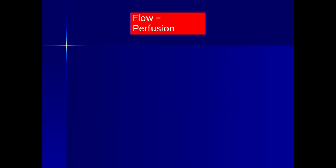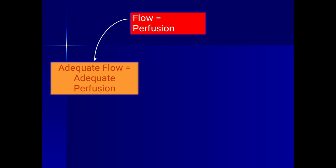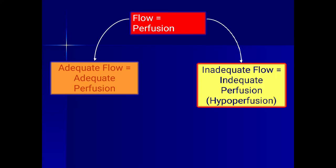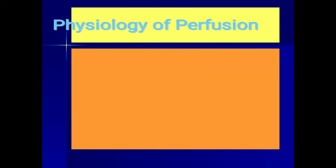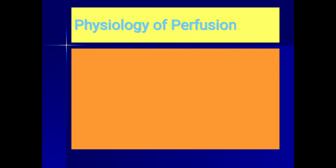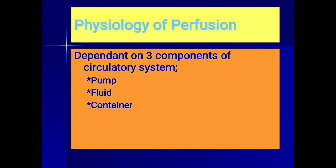Flow of blood means perfusion. Adequate flow means adequate perfusion; inadequate flow leads to hypoperfusion, and hypoperfusion means shock. The physiology of perfusion depends on three components of the circulatory system: the pump — that is the heart — the fluid — that is the blood — and the container, which is the circulatory tree.